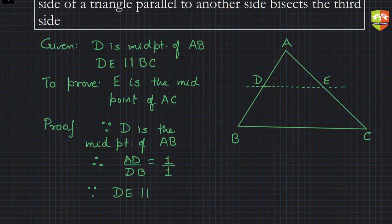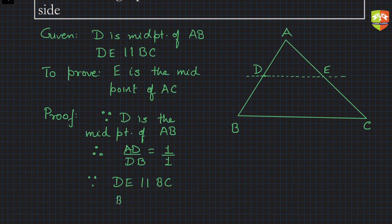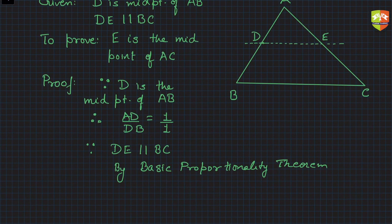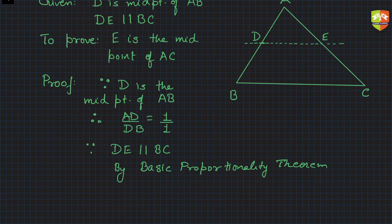Since DE is parallel to BC, a line is cutting two sides of the triangle parallel to the third side. By the Basic Proportionality Theorem — also called Thales' theorem — we know that if a line parallel to one side of a triangle divides the other two sides, the ratios of the divided segments are equal. Therefore, AD divided by DB equals AE divided by EC. Let's call this equation (2).